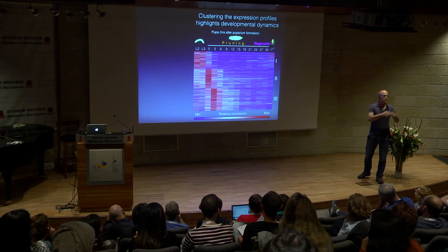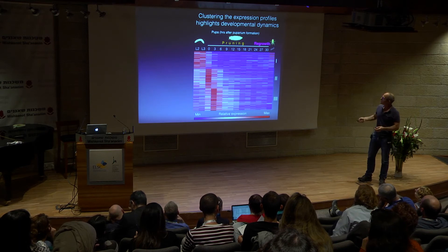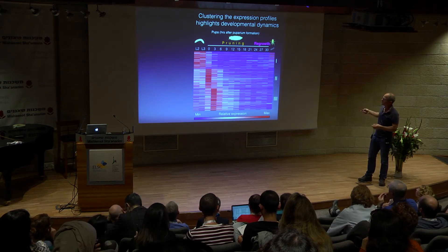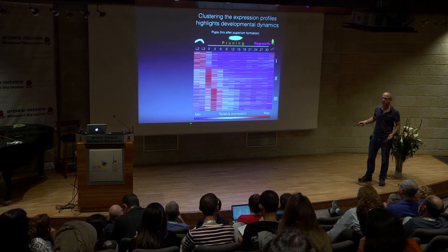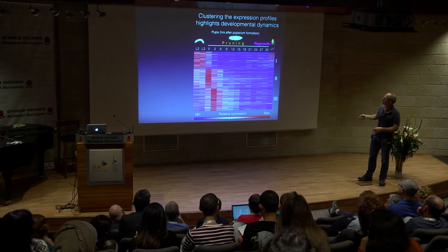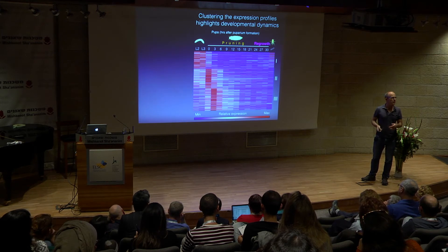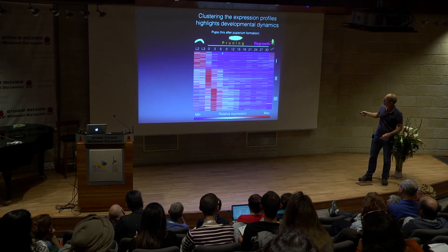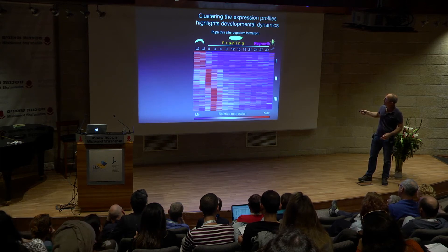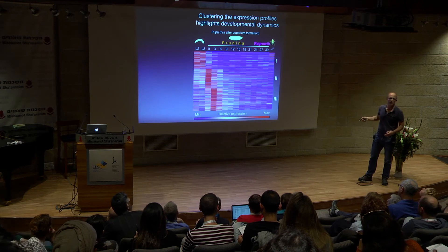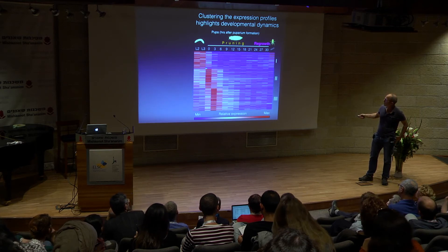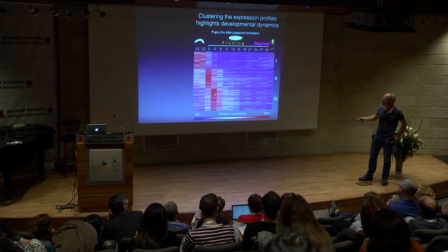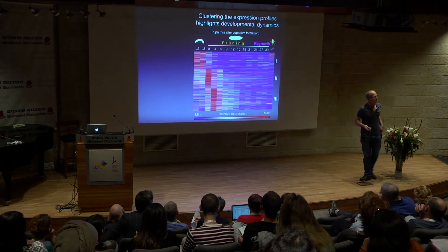Moving to the actual genes: each line represents the expression of a single gene, where red is maximum expression and blue is minimum. We clustered gene expression together and plotted when pruning occurs and when regrowth occurs. The idea is that if a gene's expression peaks at zero or three hours after pupal formation, those genes are highly likely to be important for axon pruning.